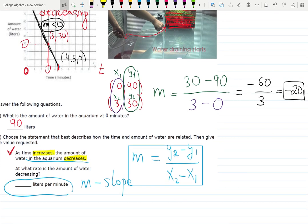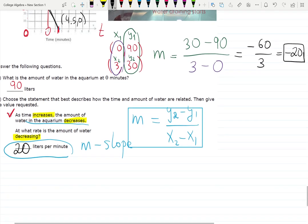But the tricky point is they don't want to mention the negative sign in the answer, because they say 'at what rate is the amount of the water decreasing?' So since they mentioned the decreasing word, it will be 20 liters per minute is decreasing.